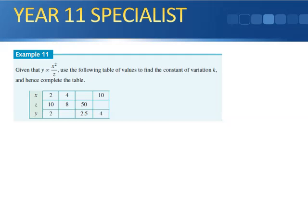Example 11. Given that y is proportional to x squared divided by z, use the following table of values to find the constant of variation k and hence complete the table. So therefore we have y equals k x squared divided by z.